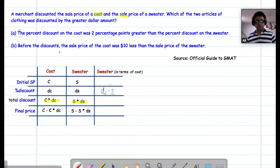Now, let's look at statement number B. Before the discounts, the sale price of the coat was $10 less than the sale price of sweater. So the sale price of the sweater is $10 more than the sales price of the coat. Now again, it doesn't give us anything about the DC and DS. And since we need all of this information, B alone is also insufficient.